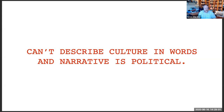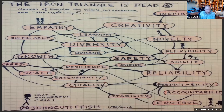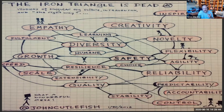This is where we get into the culture map itself. The idea was maybe we could use maps, but how on earth do you map culture? Fortunately, John Cutlefish did a graph of various different components. He was talking about how the iron triangle is dead, the illusion of a singular organizational culture, and issues of diversity, growth, and safety. That graph gave me a starting point to think about these terms.